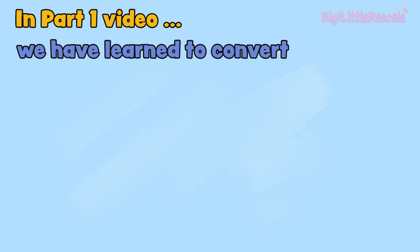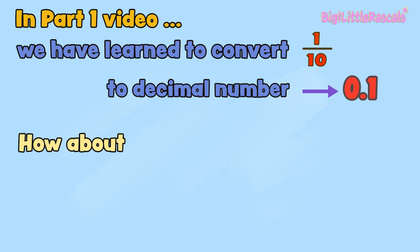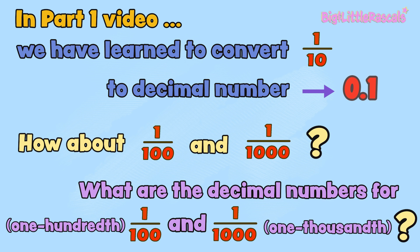In the Part 1 video, we learned that 1 tenth converted to a decimal number gives us 0.1. And now, how about 1 out of 100, or 1 out of 1,000? What are the decimal numbers for 1/100 and 1/1,000?